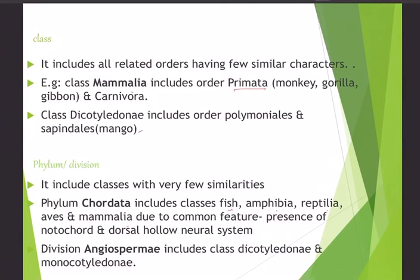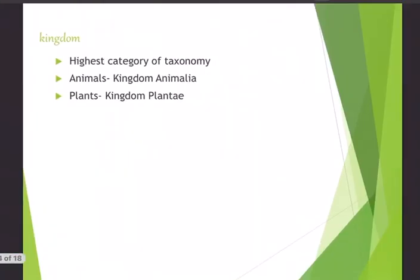Class includes all related orders with few similar characters — for example, class Mammalia includes primates like monkeys, gorillas, and gibbons, as well as Carnivora. In plants, class Dicotyledonae includes Polemoniales and Sapindales. Many classes join together to make a phylum (animals) or division (plants). As we move up the taxonomic ladder from species to kingdom, the number of shared characteristics decreases.